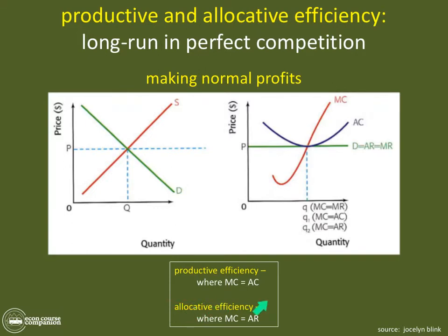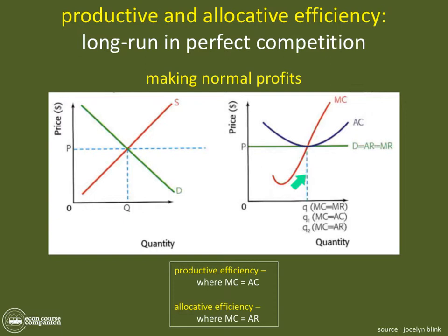Firms are allocatively efficient where MC equals AR. And there's another condition on this graph: where MC equals MR, firms are operating at their profit-maximizing level of output. All three conditions pile up in one place.